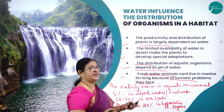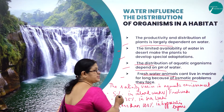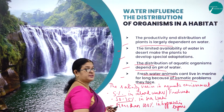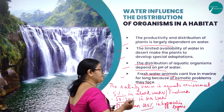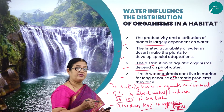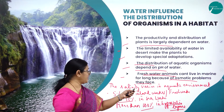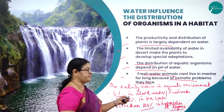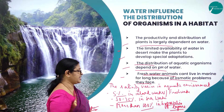Based on the salinity, the survival of organisms also varies. Salinity varies in aquatic environments: 5% in inland freshwater, 30–35% in sea water, and more than 100% in hypersaline lagoons. Based on this, animals have been broadly classified into euryhaline and stenohaline organisms.